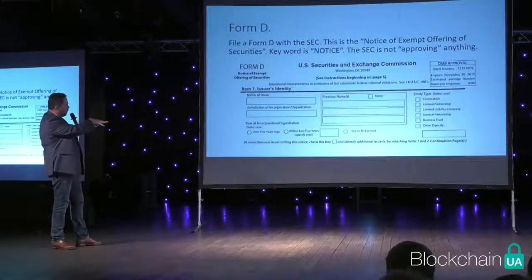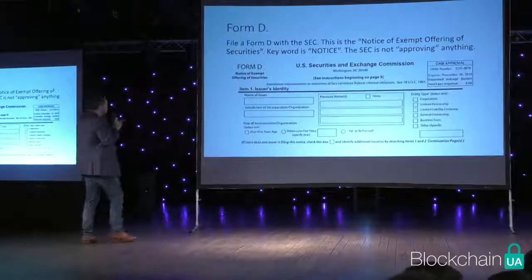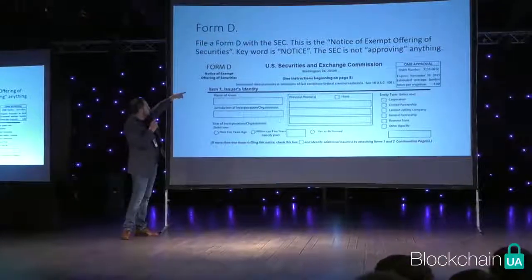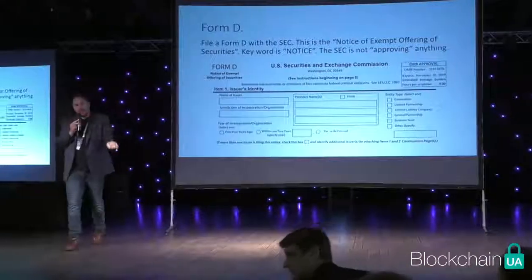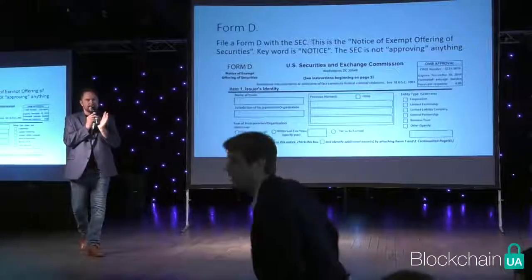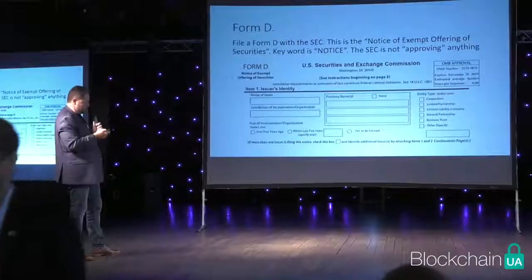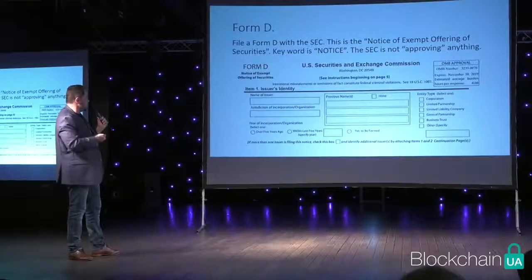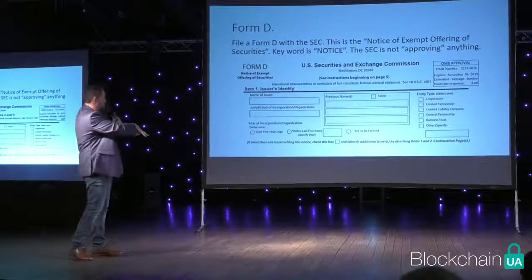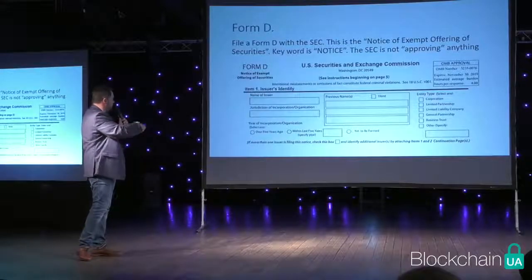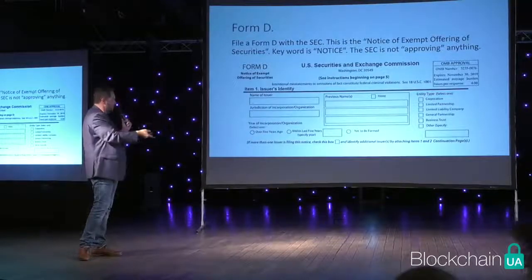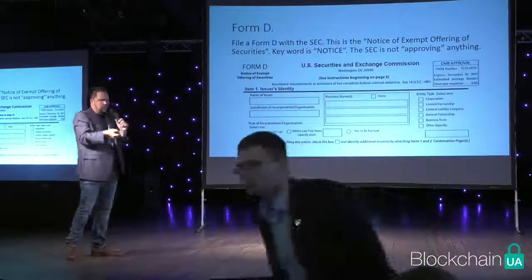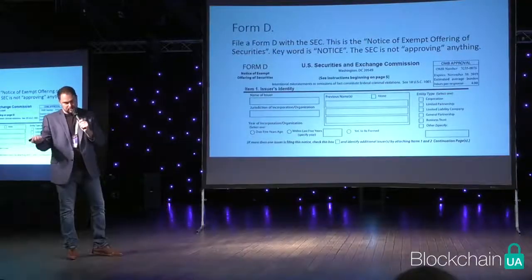Here's a quick look at the form you need to file with the government when you do a Reg D — it's called a Form D. Notice it's a notice of exempt securities; you're just letting the SEC know, not asking for their approval. It's only three or four pages long, and I always say someone who can't figure out how to fill out a Form D should not be selling securities in the first place.